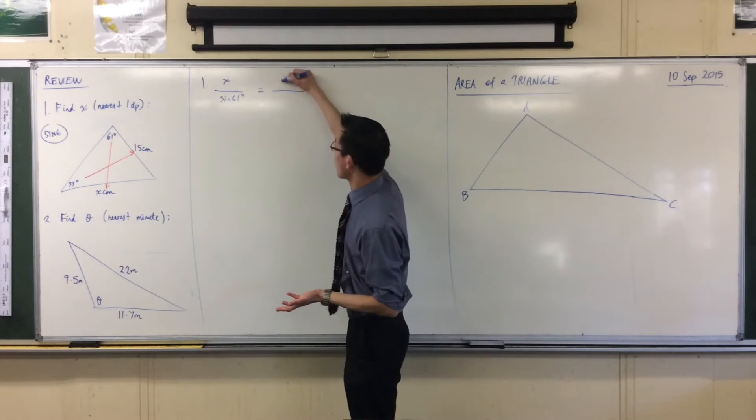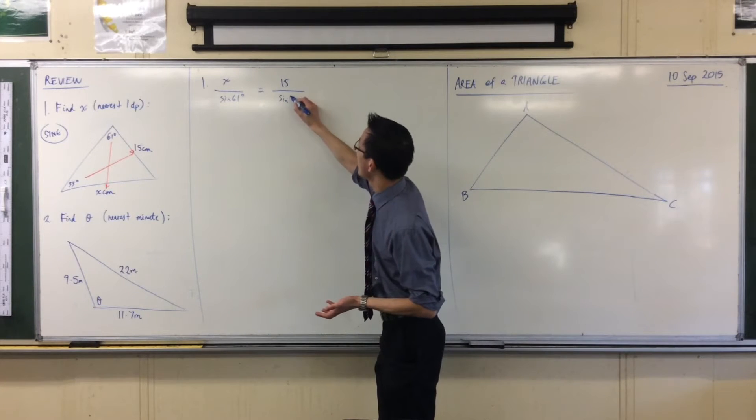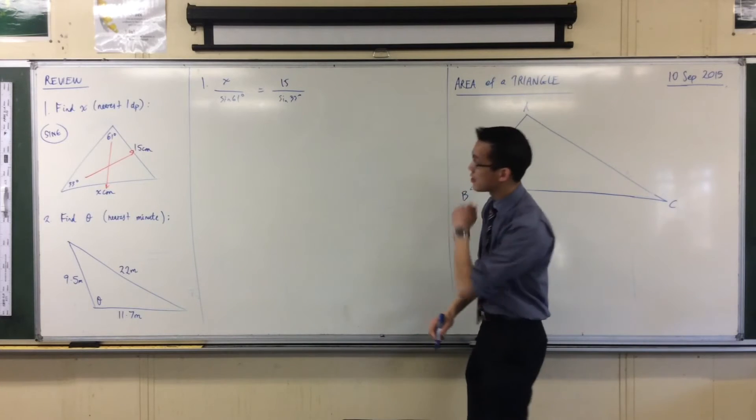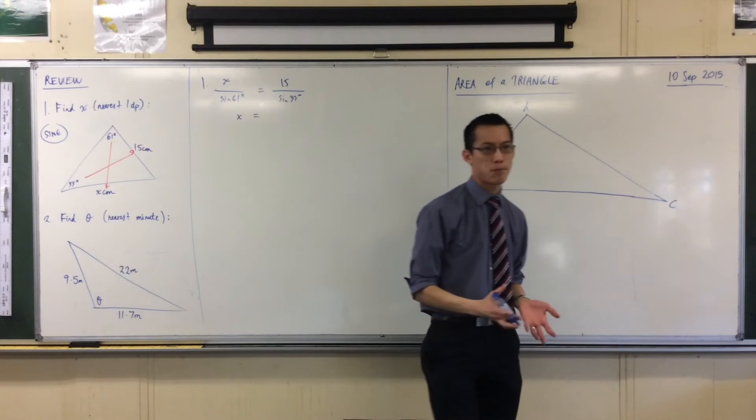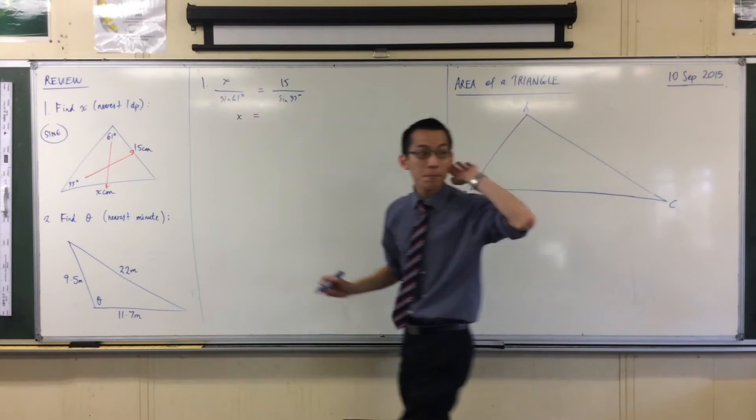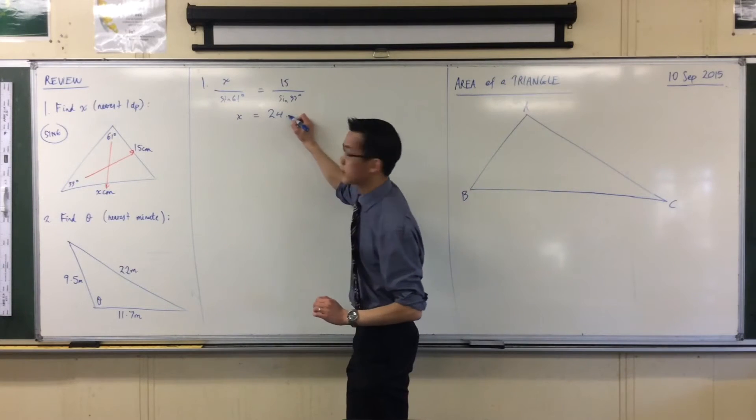All right, then you've got your other pair, right? So we've got 15 over sine 33. You're going to kick that sine 61 over the other side and get the answer out for x. There's someone already approximated to one decimal place. Say it again. 24 point 0.9.